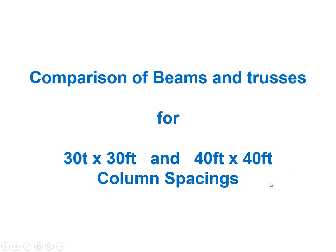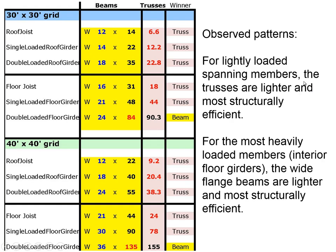We did that for both 30x30 and 40x40 grids, and now we're doing a comparison of beams and trusses. For the 30x30 grid, the beams were: W12x14 for the roof joist, W14x22 for the single-loaded roof girder, and so forth — key weights being 14, 22, 35, and so on. We've also incorporated the truss weights: 6.6 pounds per foot for the roof joist, 12.2 for the single-loaded roof girder, and 22.8 for the double-loaded roof girder.